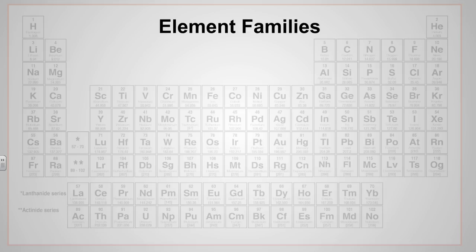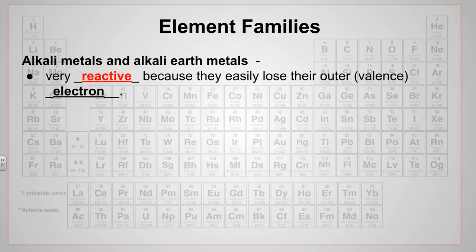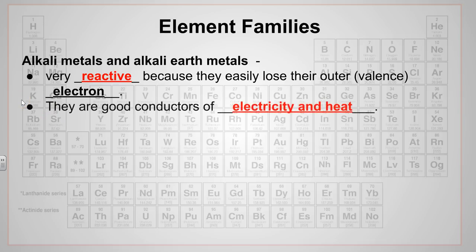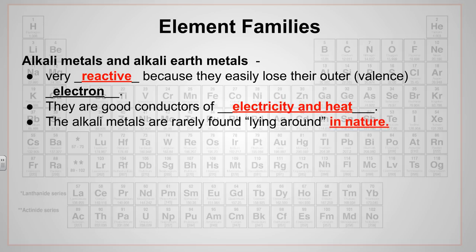Okay, so let's recap what we just learned from that video clip about element families. Let's start with the alkali metals and the alkali earth metals. Remember, these are very, very reactive. They are found over on the left-hand side of the periodic table. They can easily lose that one outer valence electron. Remember, they only have one or two, and they easily want to give them up or share them. These items are very good conductors of both electricity and heat because they're so reactive. Keep in mind that alkali metals are rarely found just lying around in nature because of how reactive they are. If we want to get them in their purest form, they have to be extracted from some sort of compound.